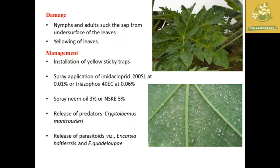In several cases, whiteflies transmit papaya viruses through sucking of the plant sap from one plant to another. The best management practice for whitefly is installation of yellow sticky traps and spraying of imidacloprid 200 SL at 0.01 percent as per the recommended dosage at the field level.